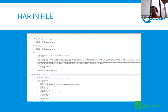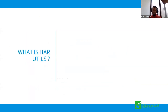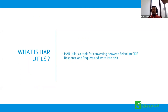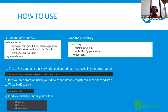We saw the possibility of writing a utility to recreate HAR files in automation. Selenium 4 features a connection to CDP, so we created a conversion between the Selenium CDP request and response and write it to a HAR file. The concept: we intercept network traffic, map the request and response to HAR format, write to a .har file, and then you can use it for further analysis in your browser or HAR analysis tools. Our tool is already online.